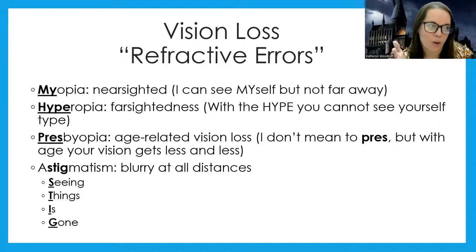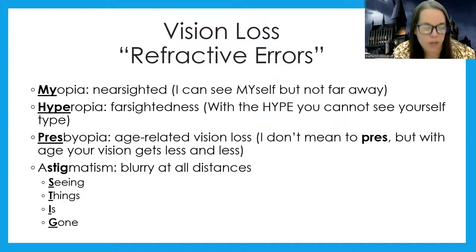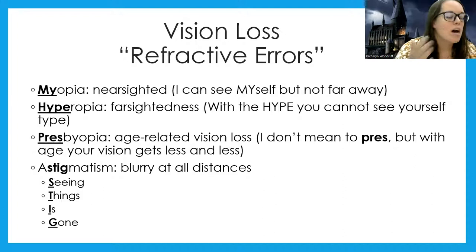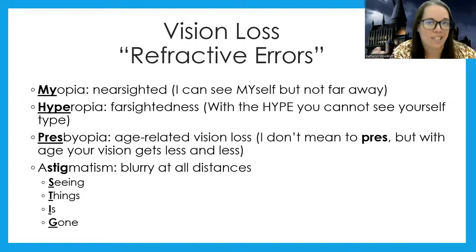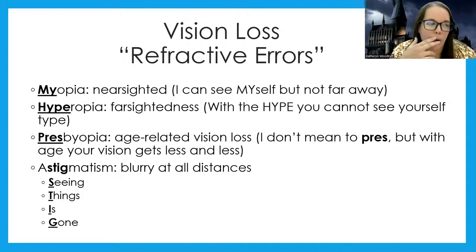Hyperopia is farsightedness — they can see far away just fine but can't see up close. Then there's presbyopia, where as we get older we have a loss of vision — the cause is age. On top of having issues seeing far away or up close, people can also have astigmatism, which is blurriness no matter what the distance. It's kind of a blurriness around the edges of objects. Some people with myopia may also have astigmatism, or hyperopia can have astigmatism as well — you could be a double or triple winner.